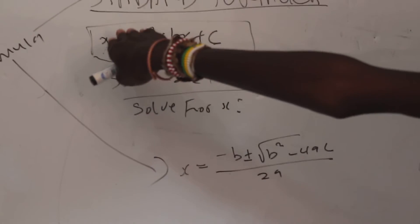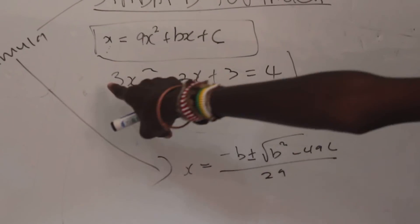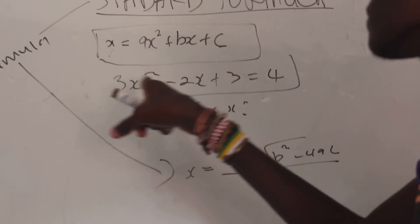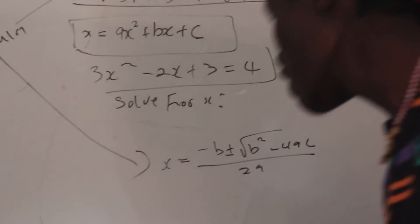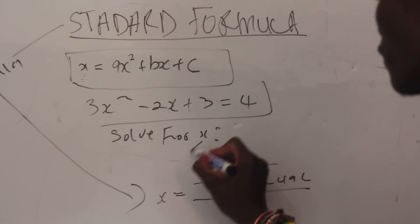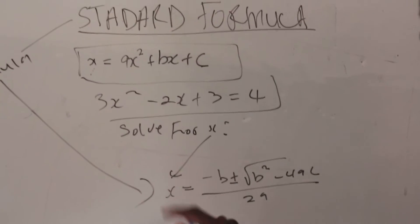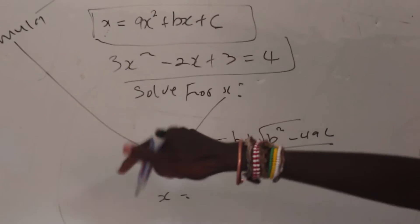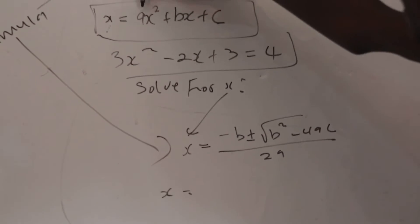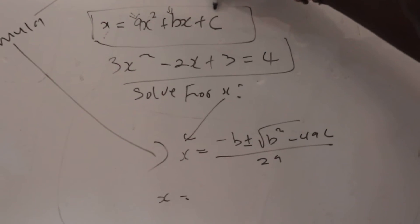I said we have a question which is asking us to solve for 3x² - 2x + 3 = 4. Now listen to me very very carefully. We are looking for x, so we are solving for x.